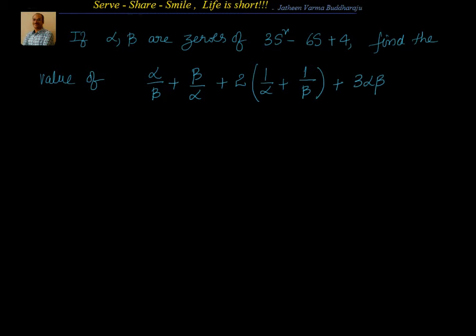Let's look at this problem. If α and β are zeros of 3s² - 6s + 4, find the value of α/β + β/α + 2(1/α + 1/β) + 3αβ.